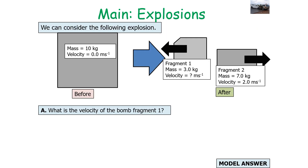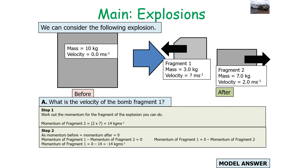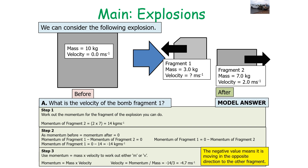What is the velocity of bomb fragment one in this example? First, work out the momentum for the fragment you can calculate: 7 × 2 = 14 kg·m/s. Since it's an explosion, the momentum before is zero and the momentum afterwards is zero. So fragment one equals minus fragment two: if fragment two has +14 kg·m/s, fragment one has −14 kg·m/s. Using v = momentum ÷ mass: v = −14 ÷ 3 = −4.7 m/s. This negative value indicates movement in the opposite direction to the other fragment.